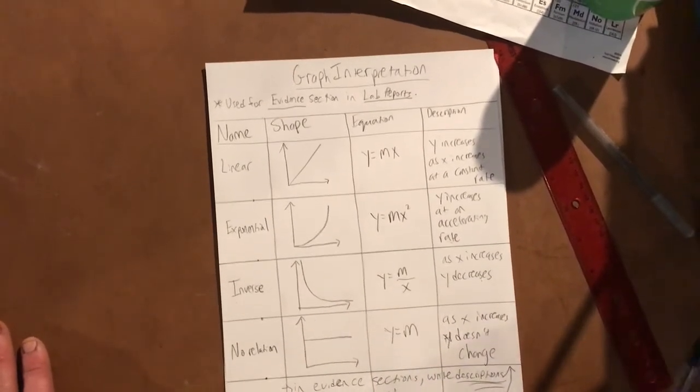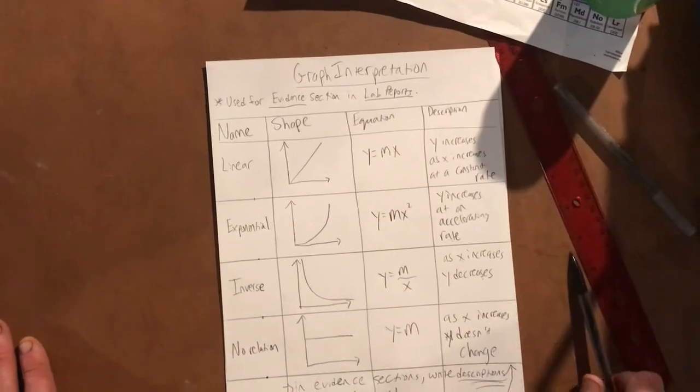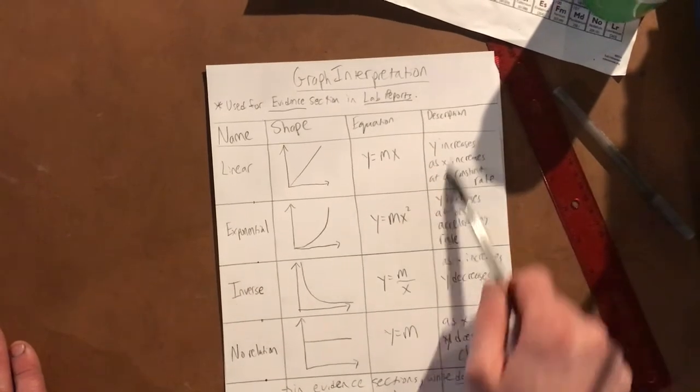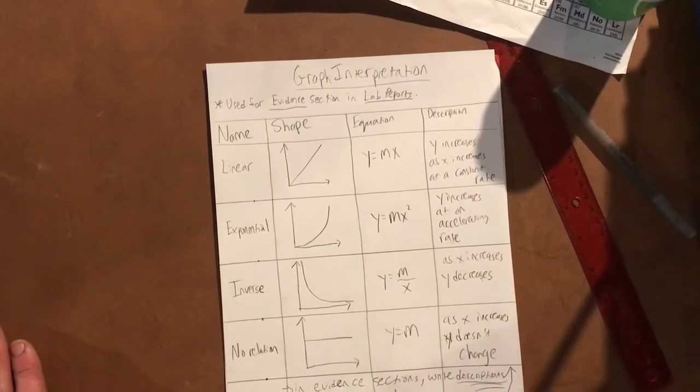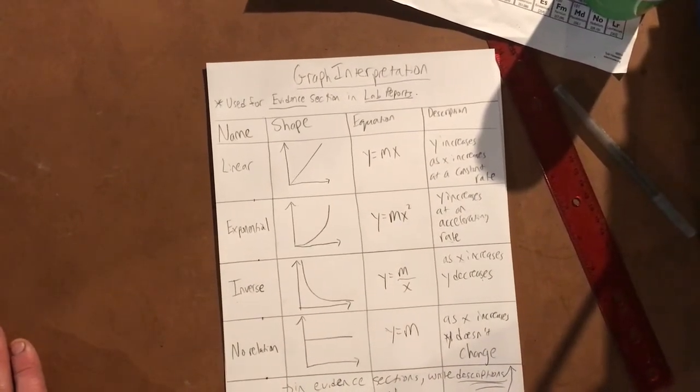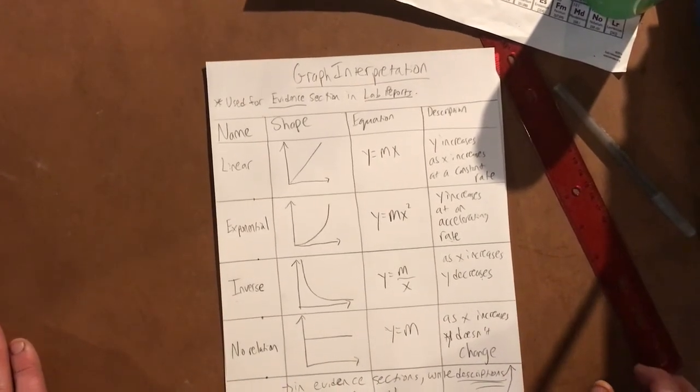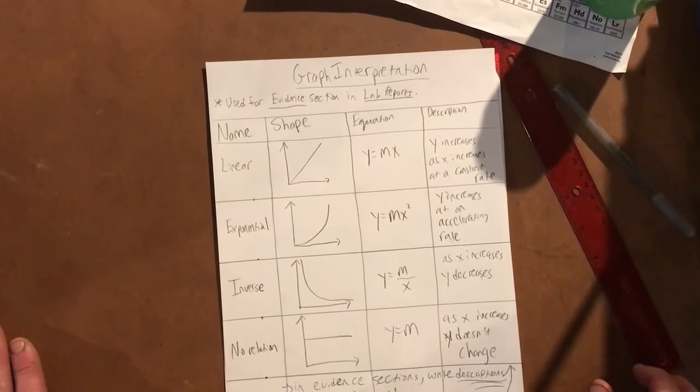We're never gonna say x or y in our description we put in our evidence section, but we are going to use this as a model where we could write a word instead of x and a word instead of y, but basically write the same exact sentence there as a description of these graphs.